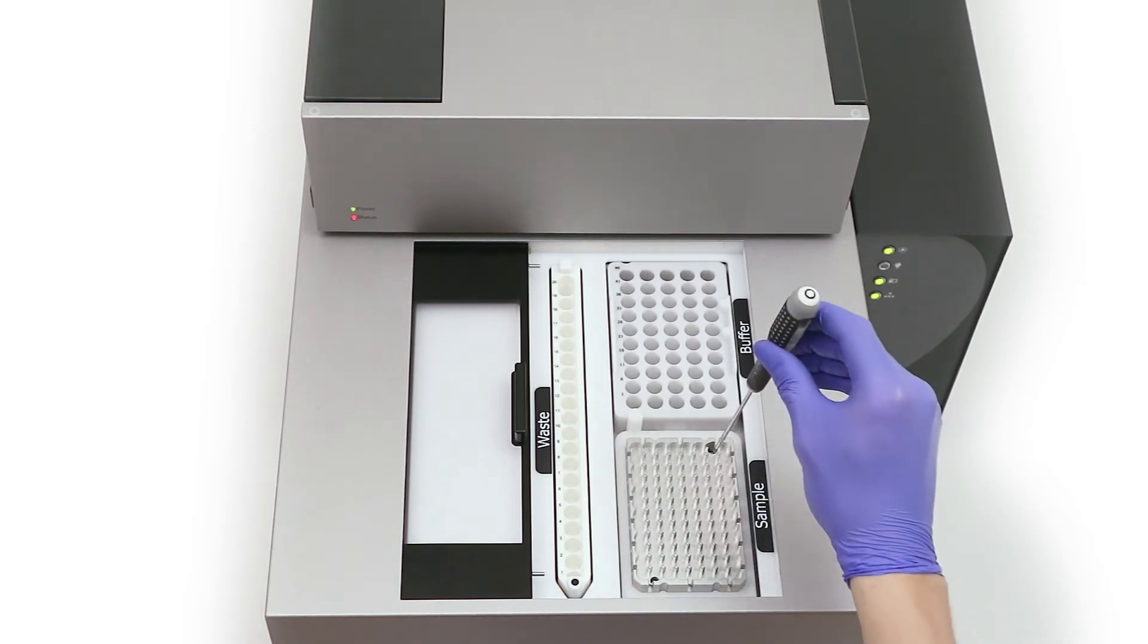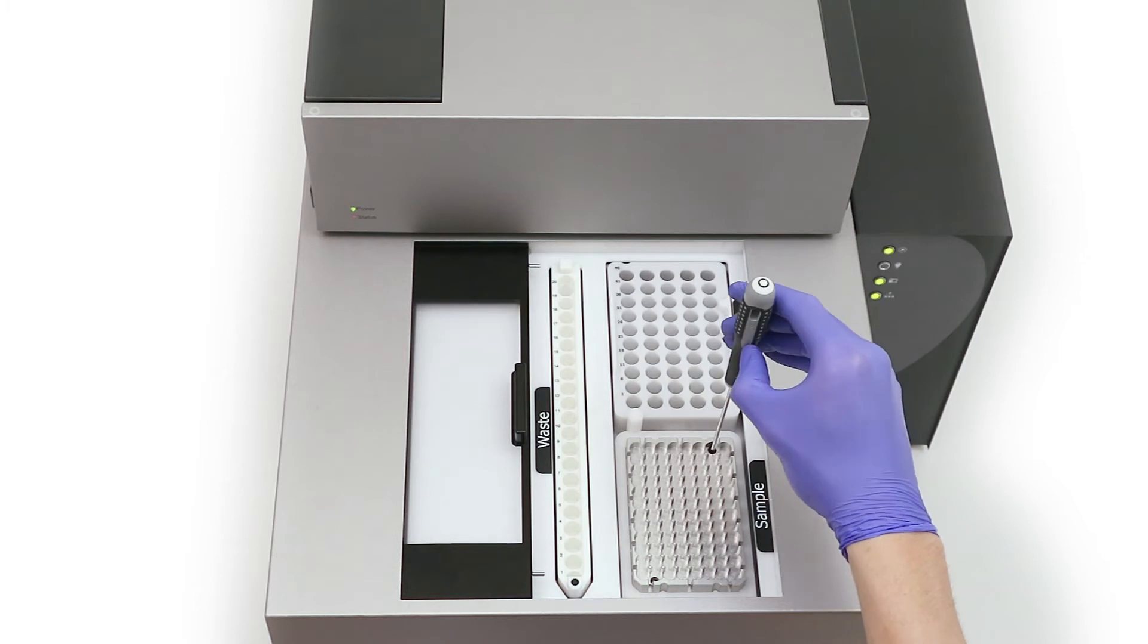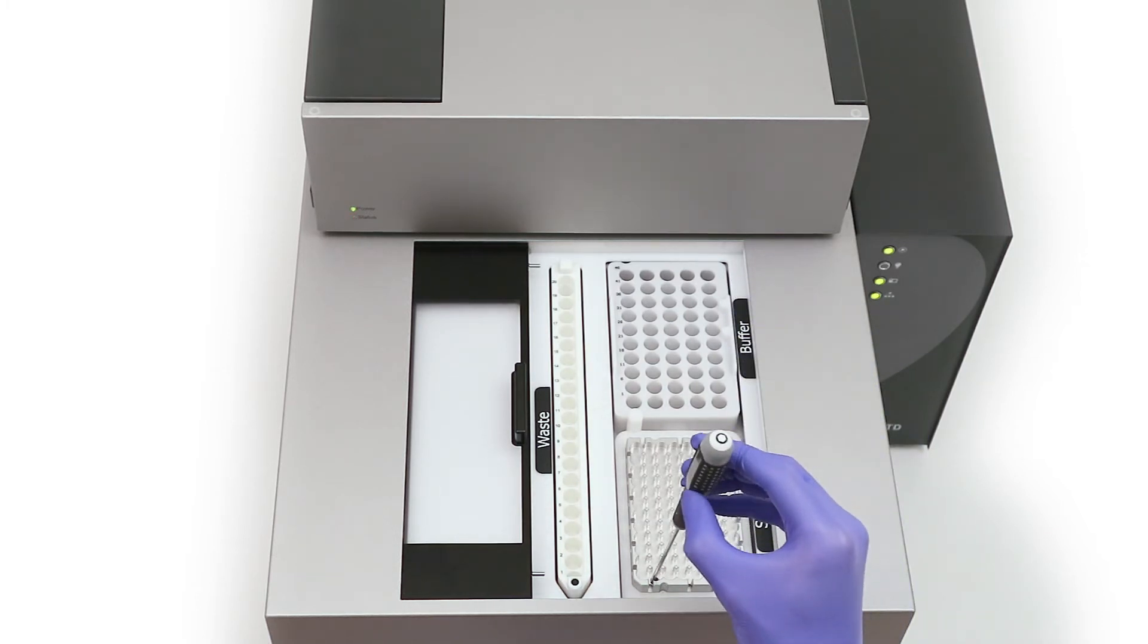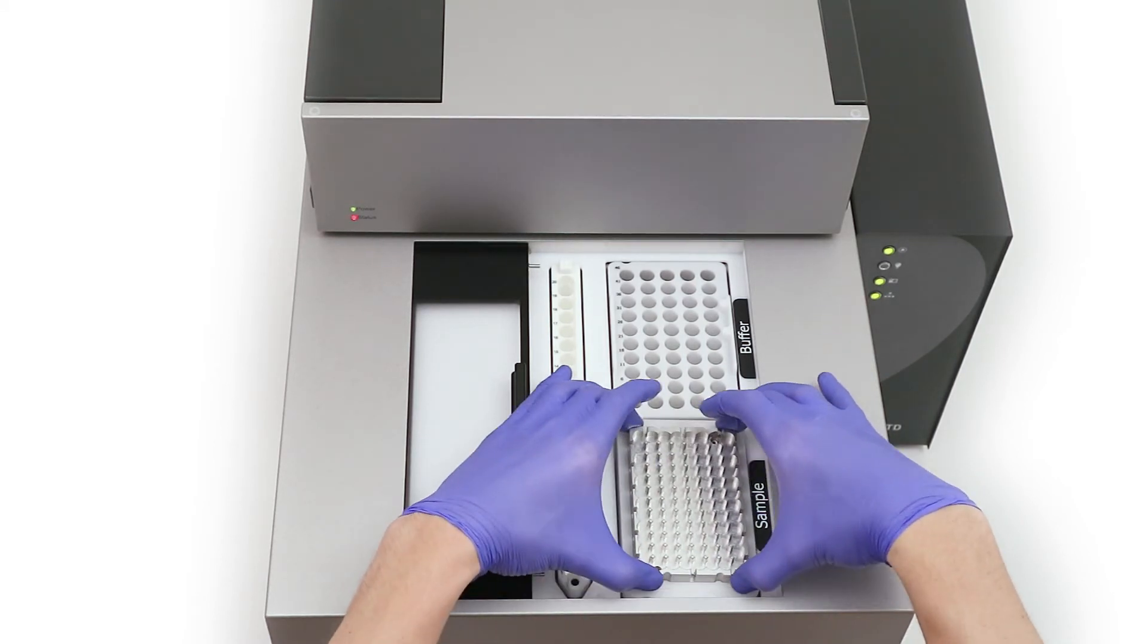Locate the two adapter screws. Using the allen wrench, push down on these screws and turn them one quarter turn counterclockwise to release them. Now gently pull the adapter out of the autosampler and put to one side.